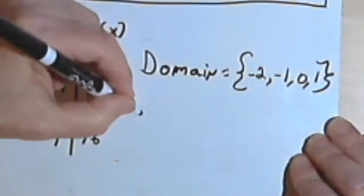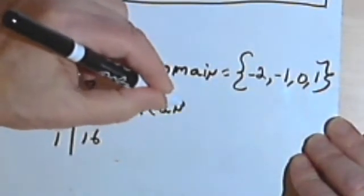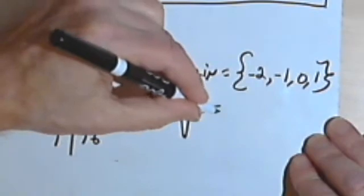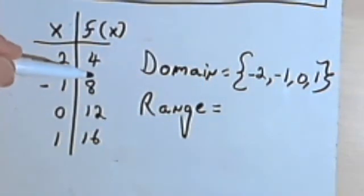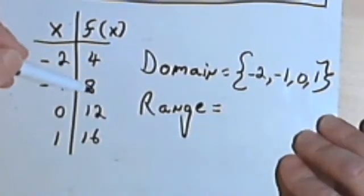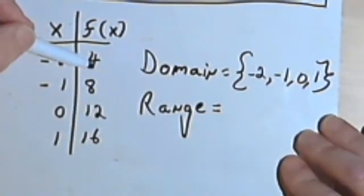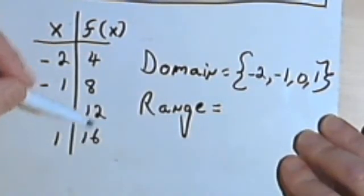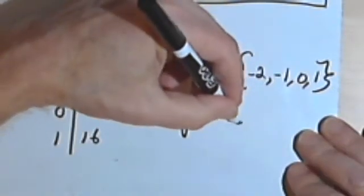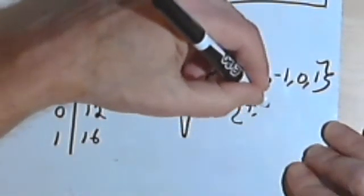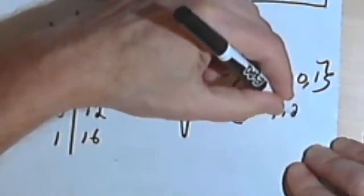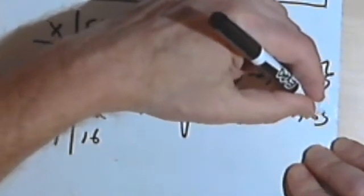If I have to find the range, the range basically is the values that I can have as output. Well, the only values I know about for this function are 4, 8, 12, and 16. So my range is also going to be a set of numbers: 4, 8, 12, and 16.